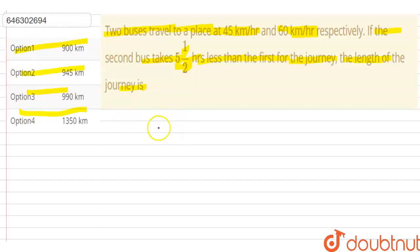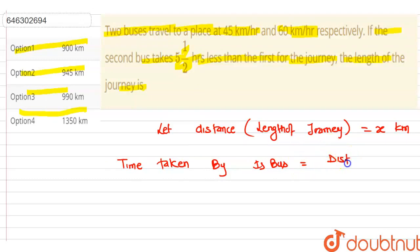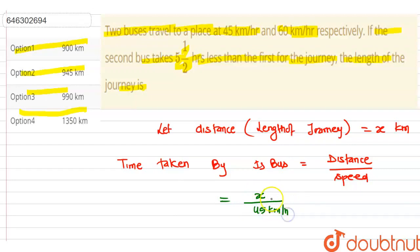Let us simplify. We can let the length of the journey be X kilometers. Now we can find the time taken by the first bus. As we know, time taken equals distance divided by speed. The distance is X kilometers and the speed of the first bus is 45 km/h, so the time taken by the first bus is X divided by 45 hours.